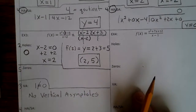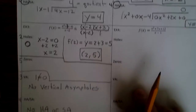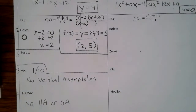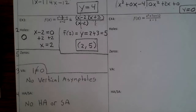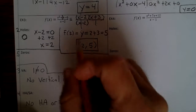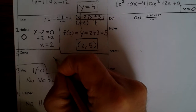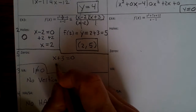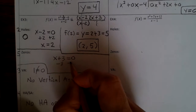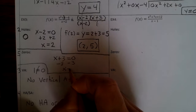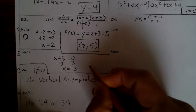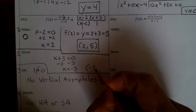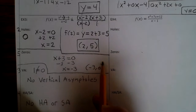To find the zeros, set the numerator equal to 0. The numerator in this case is x plus 3. Set that equal to 0 and subtract 3 from both sides: x equals negative 3. So we have a zero at (negative 3, 0). Finish up example 3.